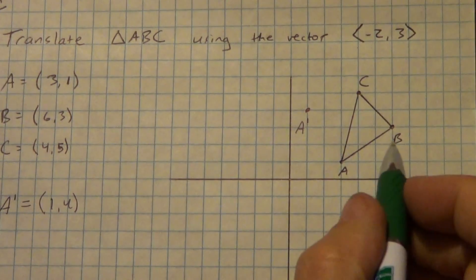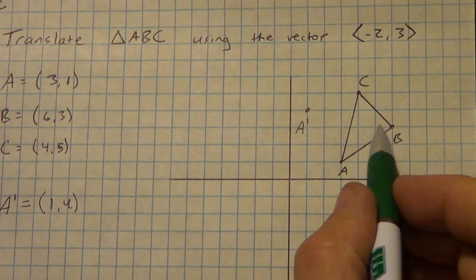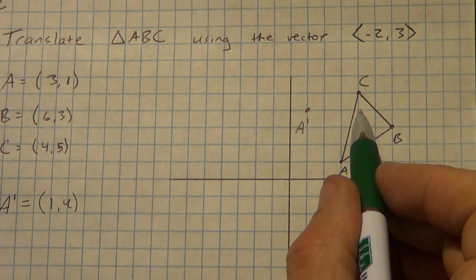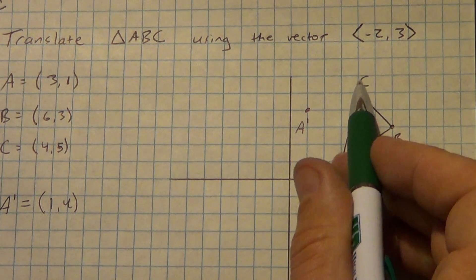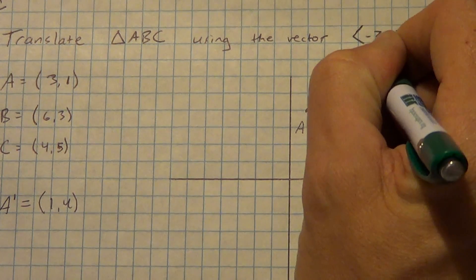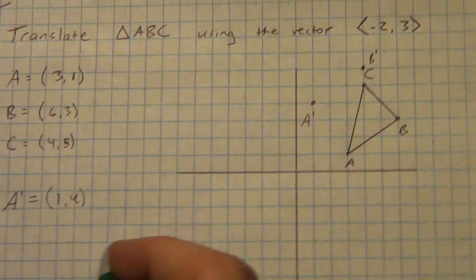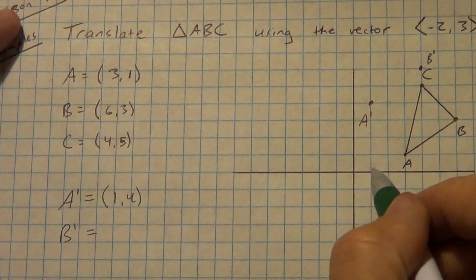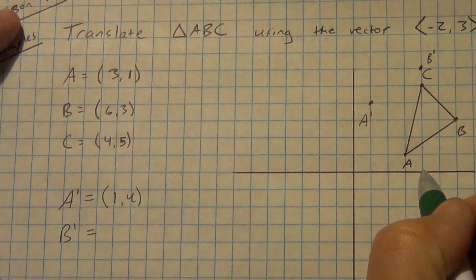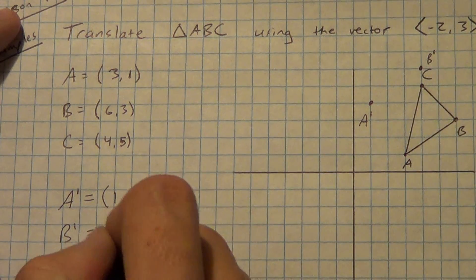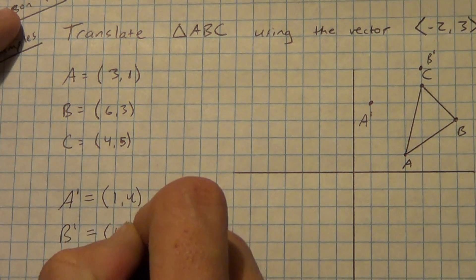Alright, let's go back to B. Remember, we're going negative 2, so left 2, and then up 3. I'm going to put a dot and call that B prime. That single quotation mark is a prime mark. B prime equals (4, 6).